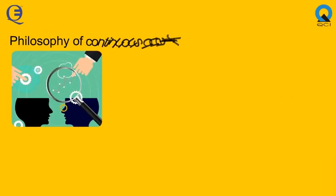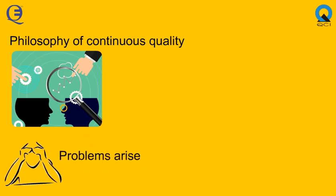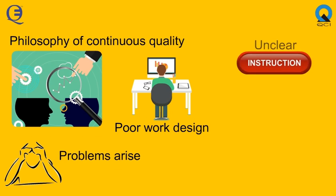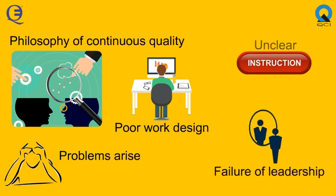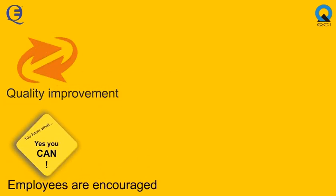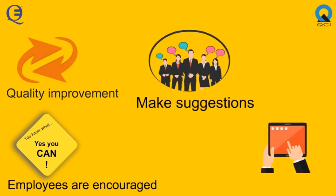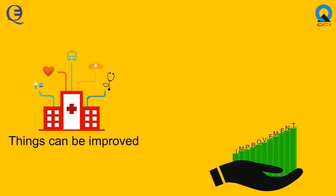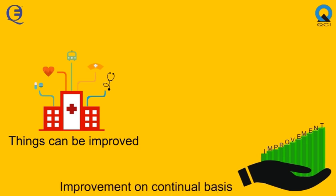The underlying philosophy of continuous quality improvement is that, when problems arise, it is generally a result of poor work design, unclear instructions, or the failure of leadership, and not the people performing the processes. Within Quality Improvement, employees are encouraged to analyze their work processes and make suggestions as to how to improve them for better healthcare delivery. The belief is that most things can be improved on a continual basis and not on an ad-hoc basis.